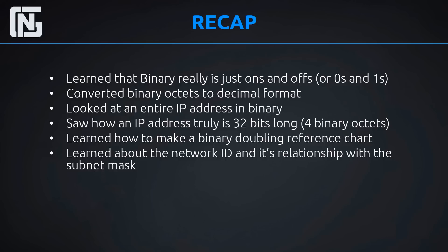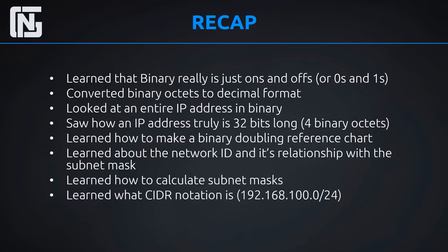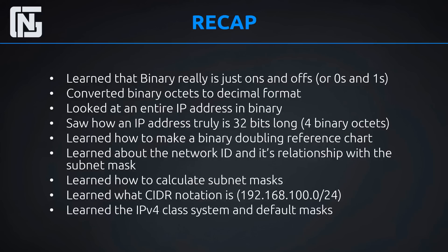We also learned about network ID and how it's related to the subnet mask — how you can take your subnet mask and figure out what your network ID is given an IP address. We learned how to calculate subnet masks in binary and in decimal. We looked at CIDR notation — classless inter-domain routing — written as an IP address followed by a slash and the number of bits in the subnet mask. And lastly, we wrapped up with the IPv4 class system and the default mask associated with each class.